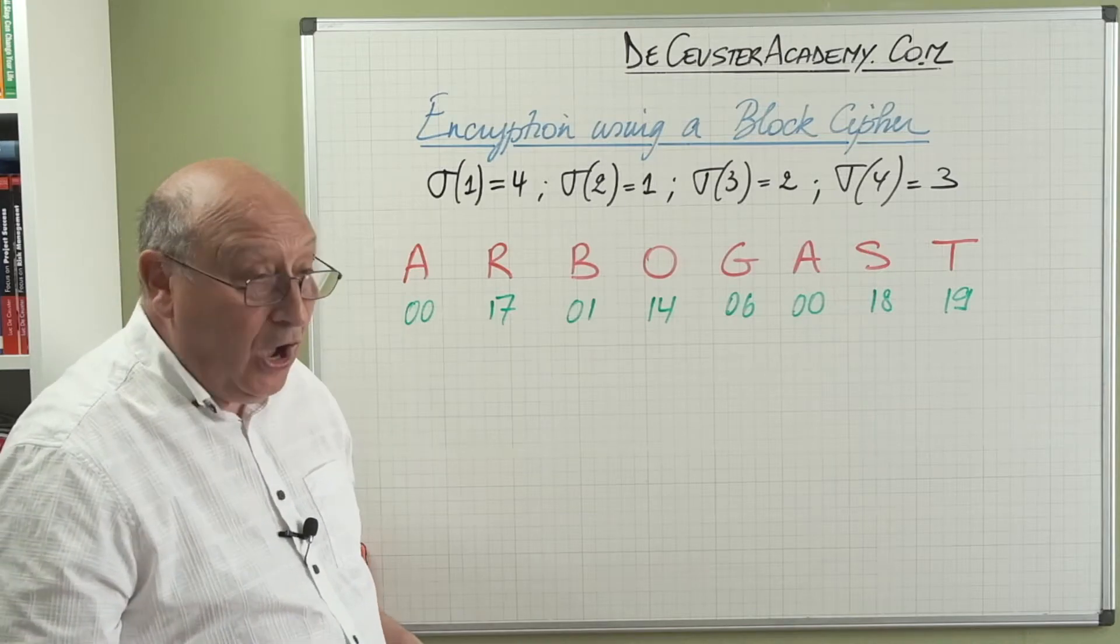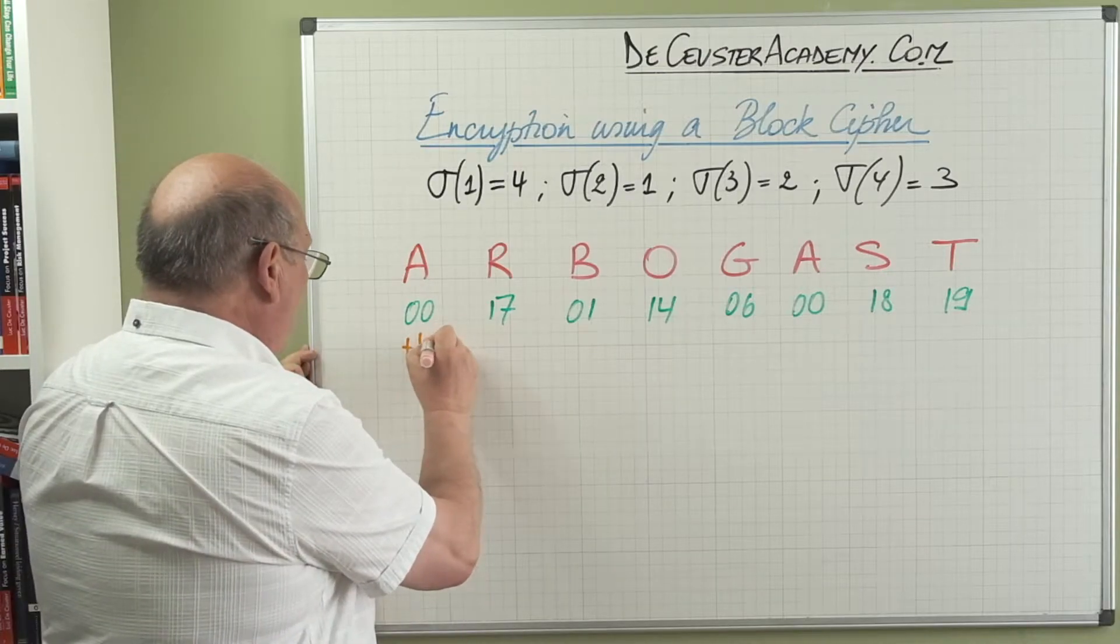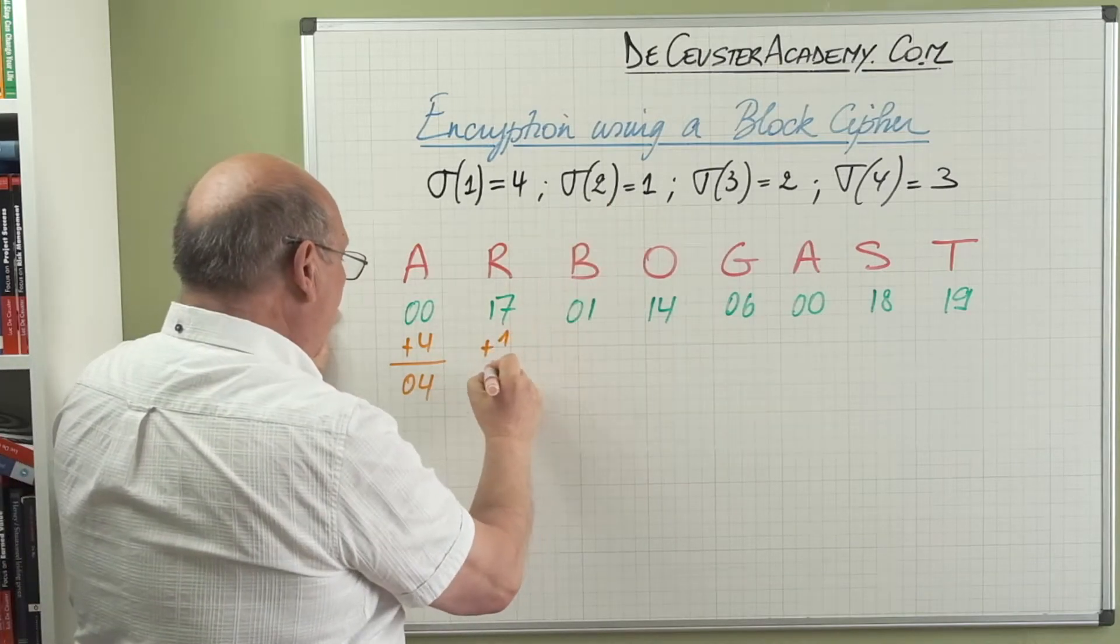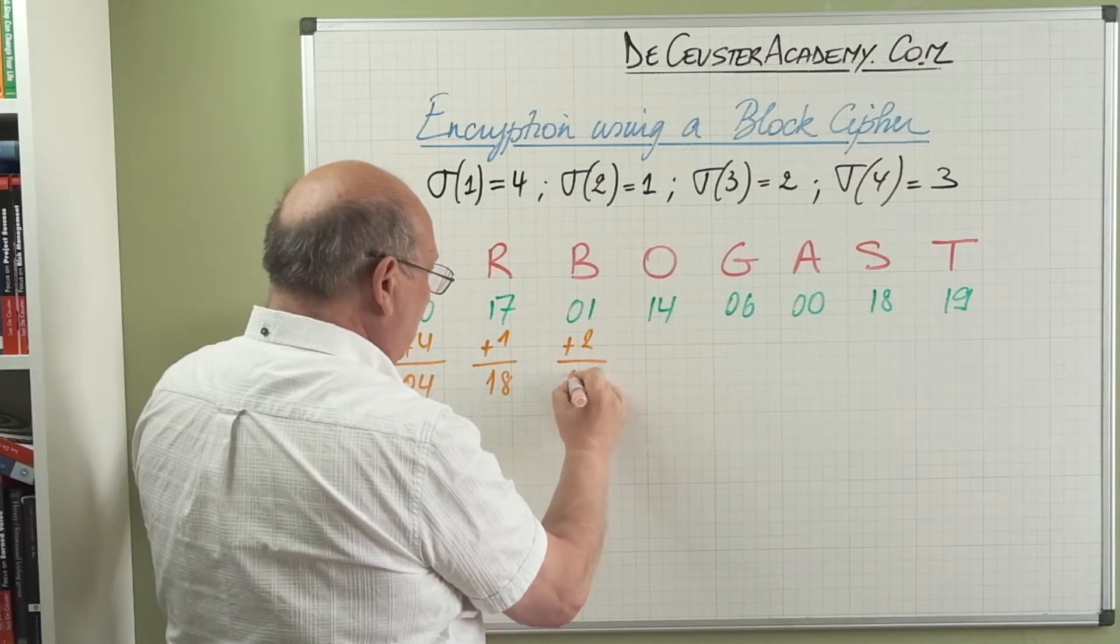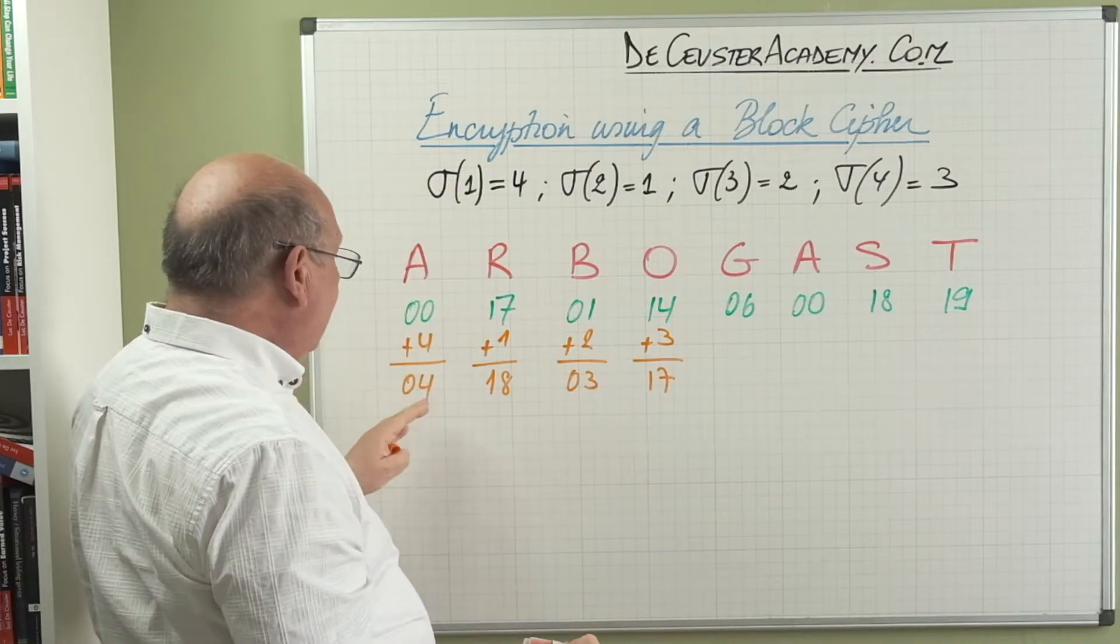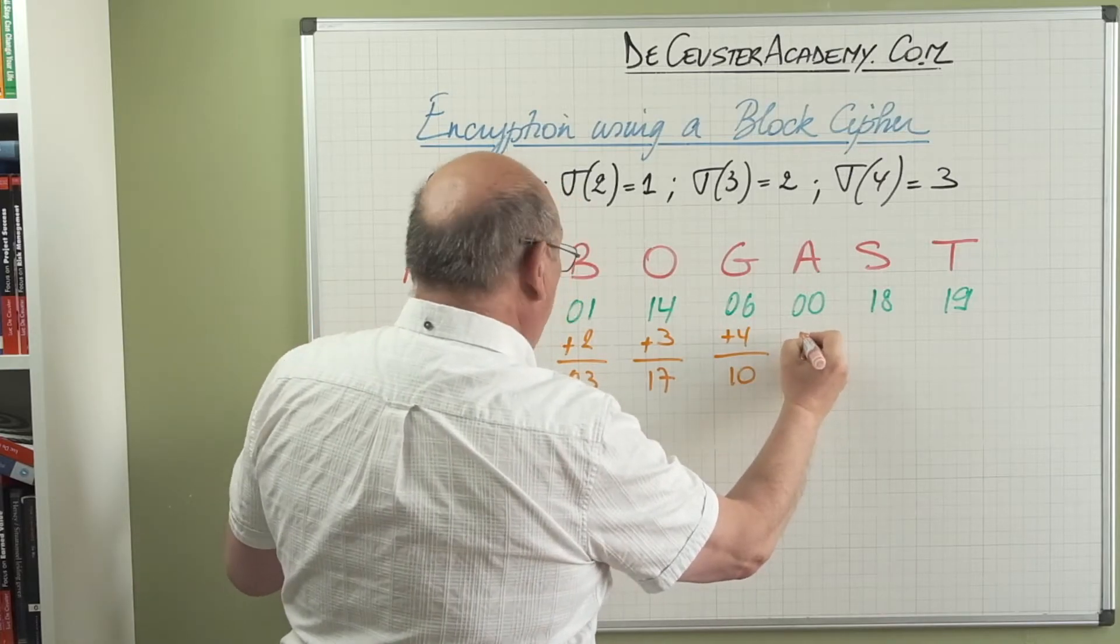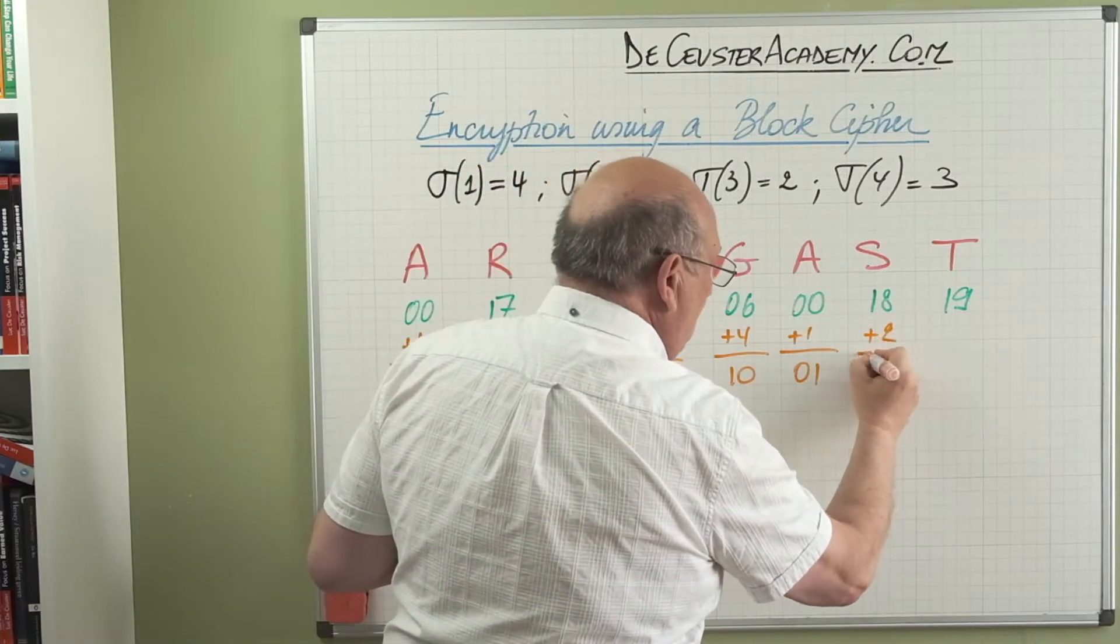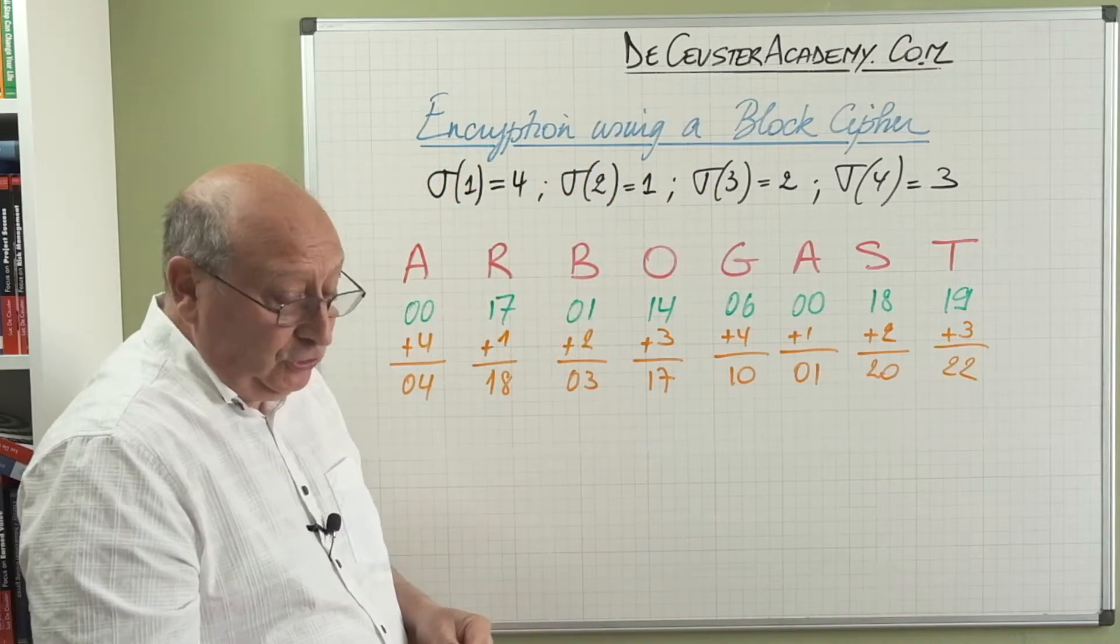And what we have to do now is we have to add those different numbers. So the first one we add four, so we find zero four. The second number, we add sigma two, which is one, which is 18. Then we have plus two, which is zero three. And the fourth one, plus three, is 17. And then we start again, so we have plus four, so we have 10. Plus one, we have zero one. Plus two, we have 20, and the last one, plus three, we have 22.